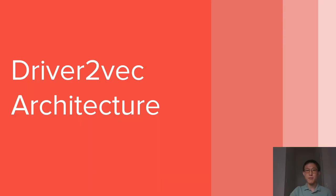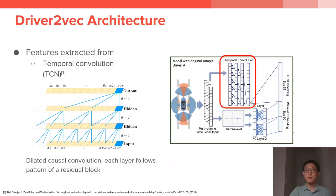Now let's explain the Driver2Vec model. For feature extraction, there are two paths. The first is a temporal convolutional network, circled in red. The 1D temporal convolution is a dilated causal convolution, as shown in the image. Each layer operates like a residual block in a residual network, but notice that there is a tilt, which is why this 1D convolution is causal. We chose TCN because it has shown great performance in other time series tasks, such as audio classification.